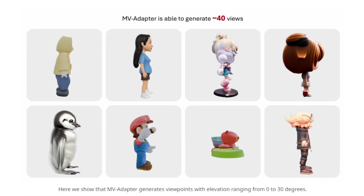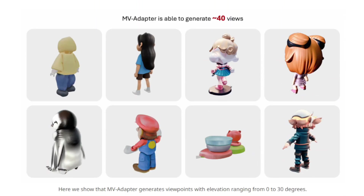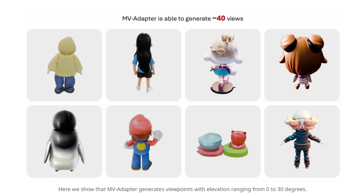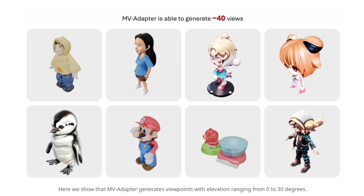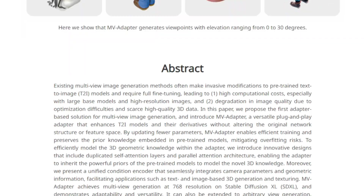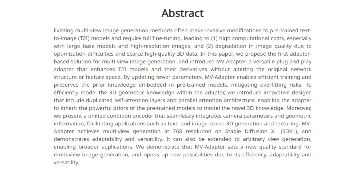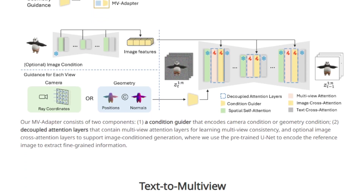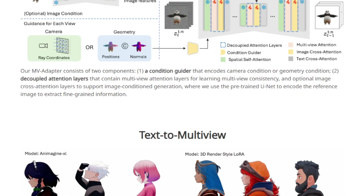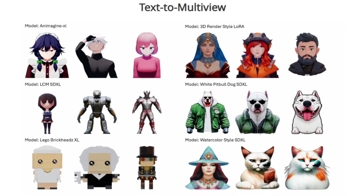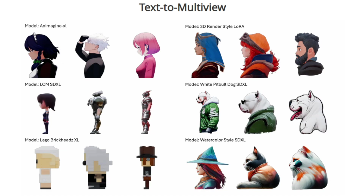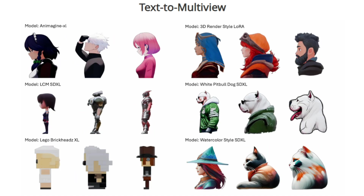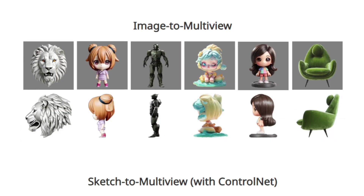MV Adapter, on the other hand, acts as a plug-and-play adapter, enhancing T2I models and their derivatives without altering their original structure. This means it updates fewer parameters, leading to more efficient training while preserving the pre-trained model's knowledge. This approach effectively mitigates overfitting risks and improves computational efficiency, especially for large models and high-resolution images. MV Adapter comprises two key components: a condition guider and decoupled attention layers.